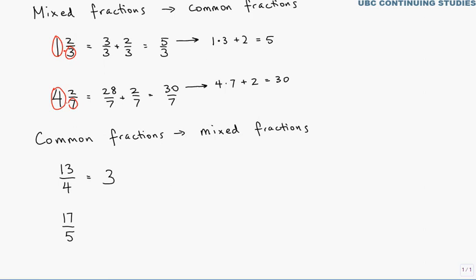So, how many times does four go into thirteen? It goes in three times. When you take the three and you multiply it by four, you get twelve. So, you still have one part left over. So, three and one quarter.